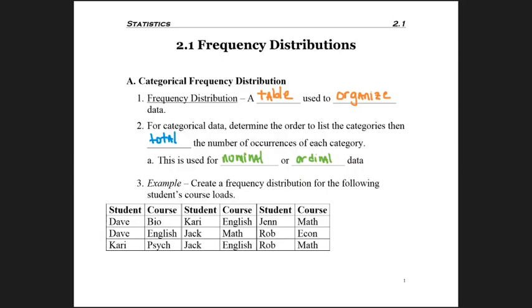So consider this table that's listed down below. My directions are to create a frequency distribution. It doesn't say categorical, but that's the type of data I'm given.